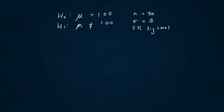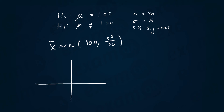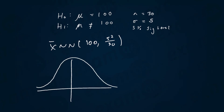Again, very simple — the same thing. I'm going to write out the sample mean distribution: x̄ ~ N(100, 5² / 30). I'm trying to work out two values now, so I'll sketch the normal distribution curve. For a two-tail test, we halve the significance level, giving 0.025 on each tail — so getting less than the lower value is 0.025 and getting more than the upper value is 0.025.